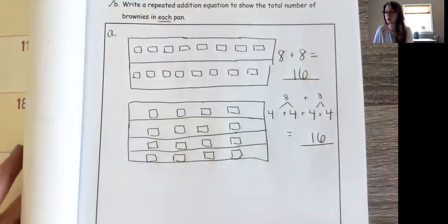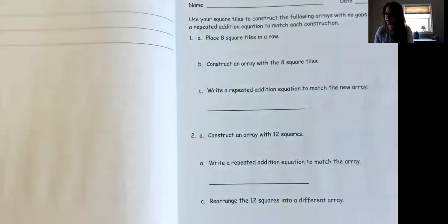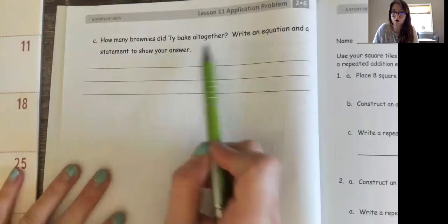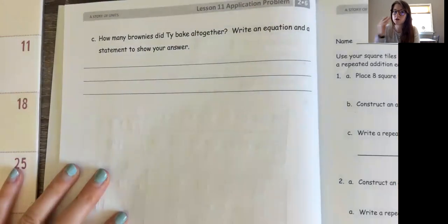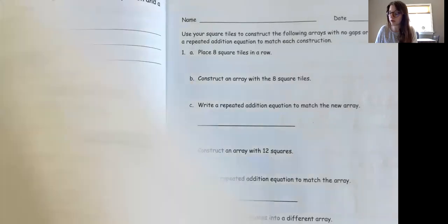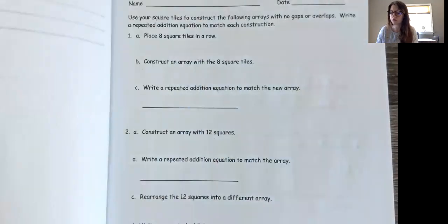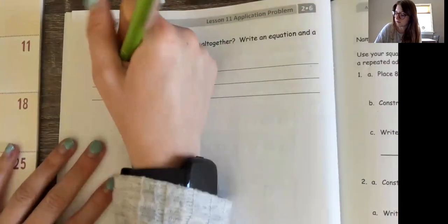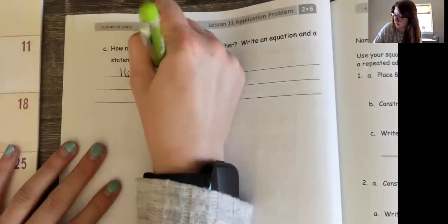So we did our repeated addition equations for both parts. Now I'm going to turn to page 62 and figure out how many brownies Ty baked all together — write an equation and a statement to show your answer. I need to figure out how much he baked all together, meaning between both pans. He baked 16 in the first pan and 16 in the second pan, so I'm going to write my equation: 16 plus 16 equals.